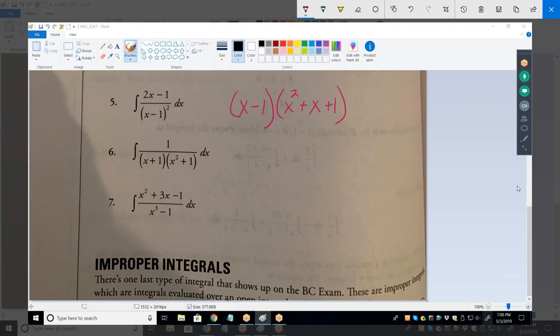And that is an irreducible quadratic factor. In other words, that will not factor down any further. So, of course, I have the numerator. What's this going to be equal to?